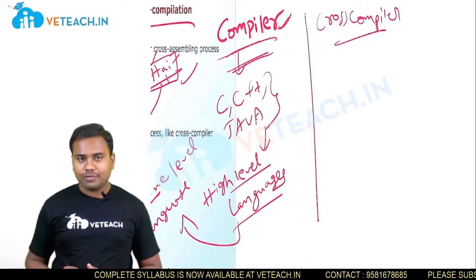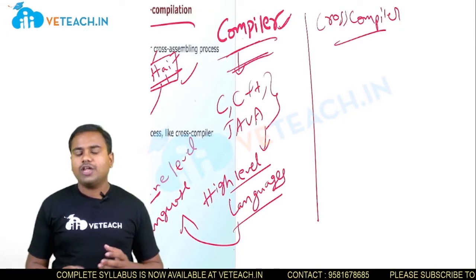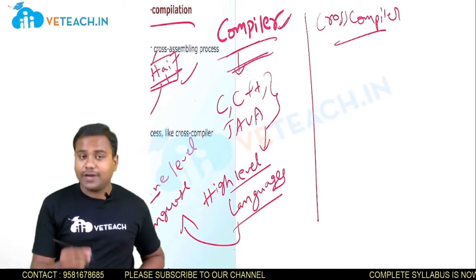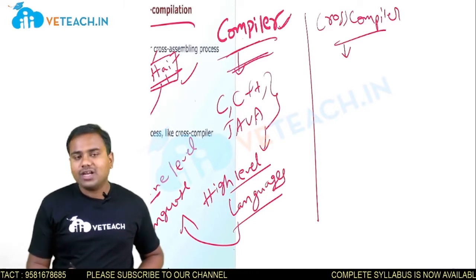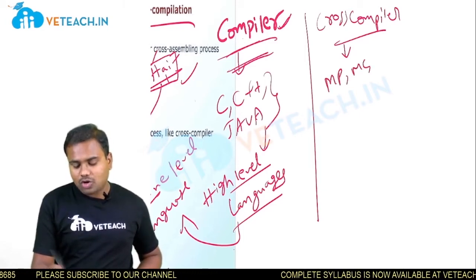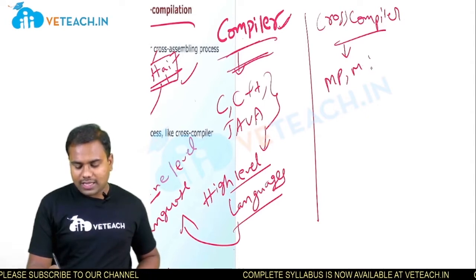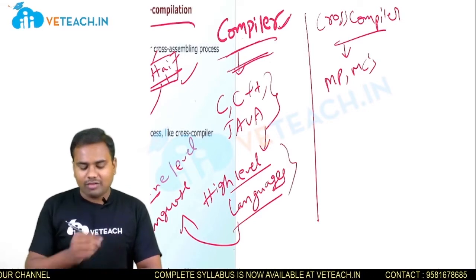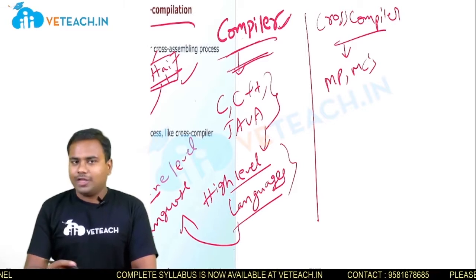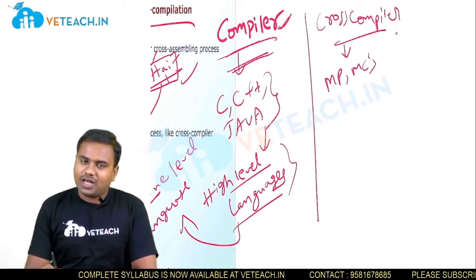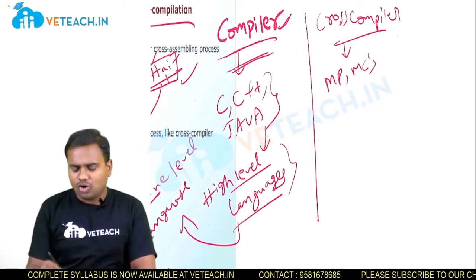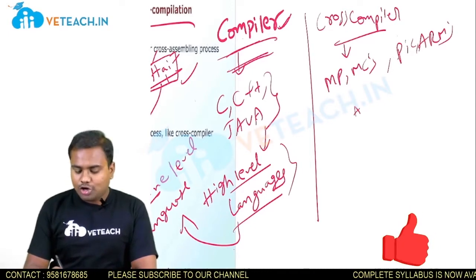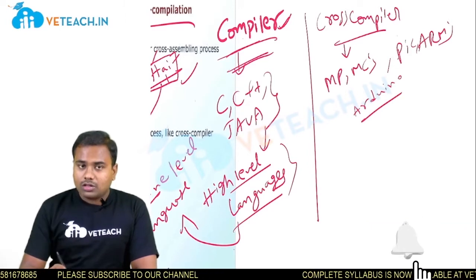So what is this cross compiler? The cross compiler is similar to the compiler. This cross compiler will work on microprocessors and microcontrollers. Whereas the compiler will work with high level languages like C, C++, Java, or any other high level language, the cross compiler will work on hardware components like microprocessors, microcontrollers, ARMs, and Arduino like that.